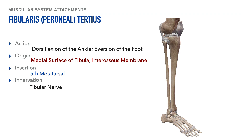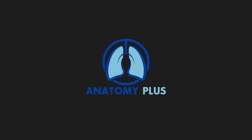The last muscle of this group is called the fibularis tertius. Its action is dorsiflexion of the ankle and eversion of the foot. Its origin is on the medial surface of the fibula and the interosseous membrane joining the tibia and fibula. Its insertion is on the fifth metatarsal, and its innervation is from the fibular nerve. Thank you for watching this video — I hope you gained value out of it, and please feel free to check out the next video.